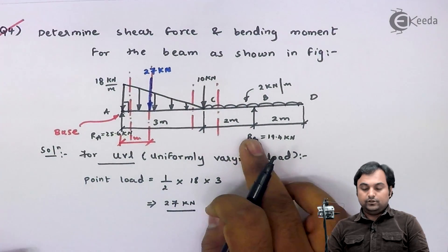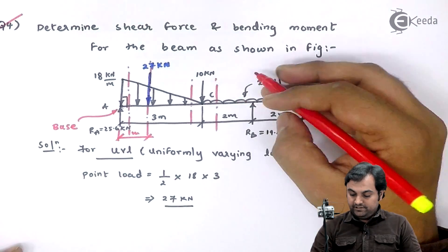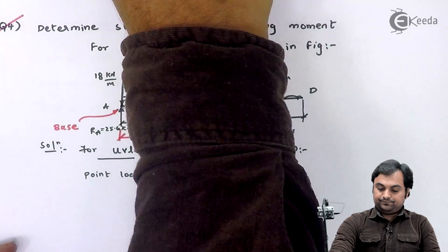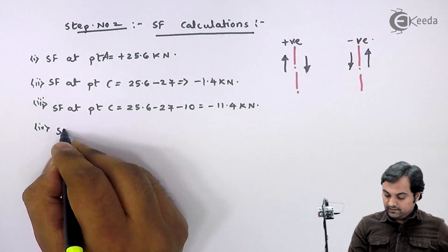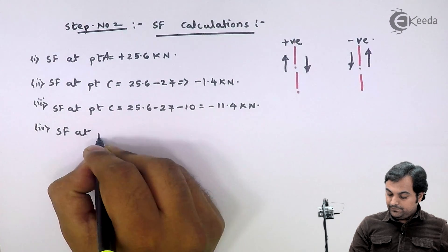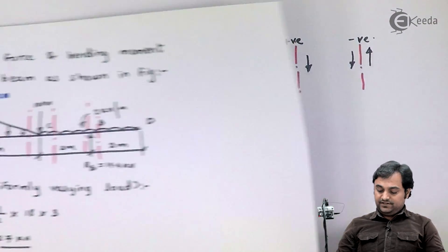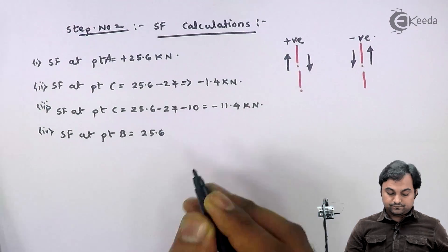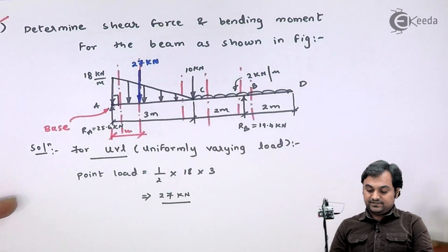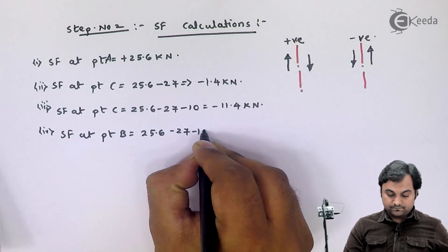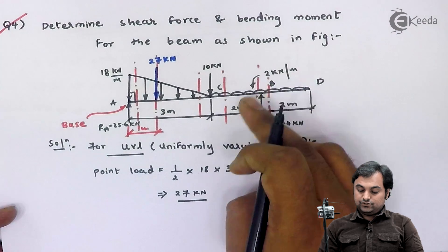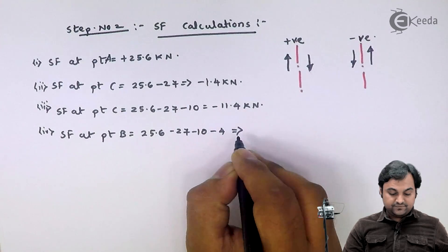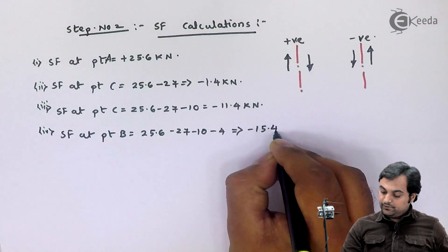For SF at point B, taking the section to the left of B: I have 25.6 minus 27 minus 10, and the UDL contribution is 2 times 2 downward giving minus 4. So SF to the left of B equals 25.6 minus 27 minus 10 minus 4, which comes out to be minus 15.4 kilonewton.